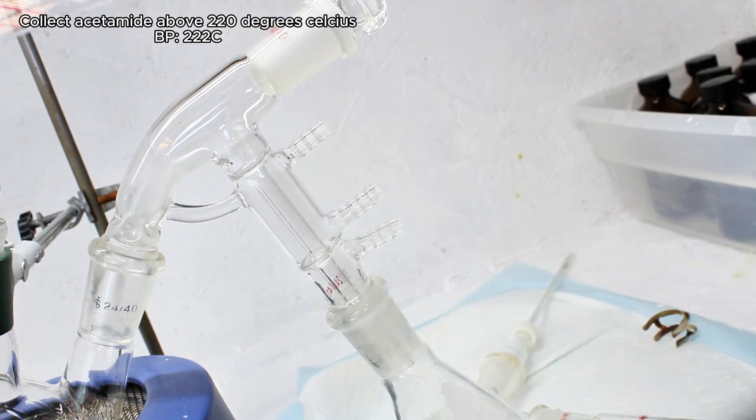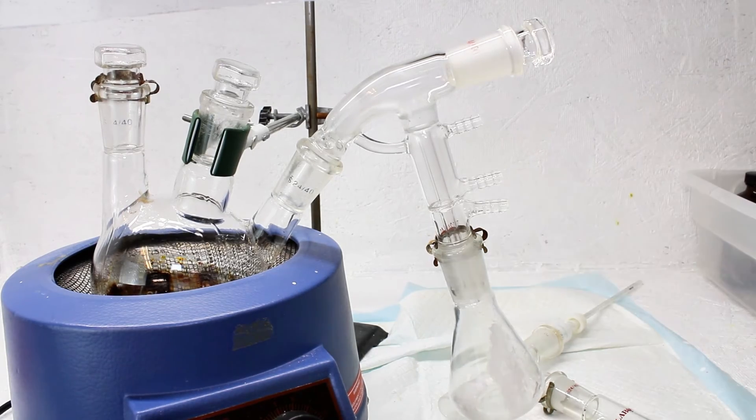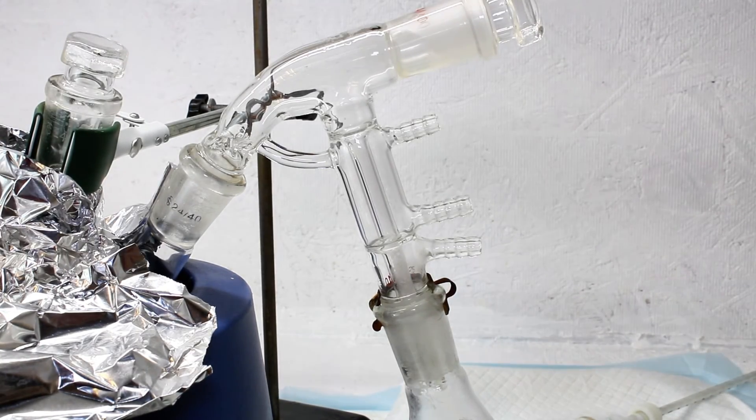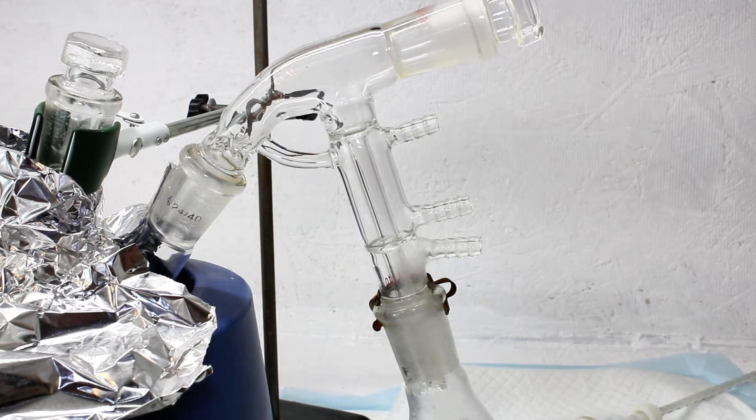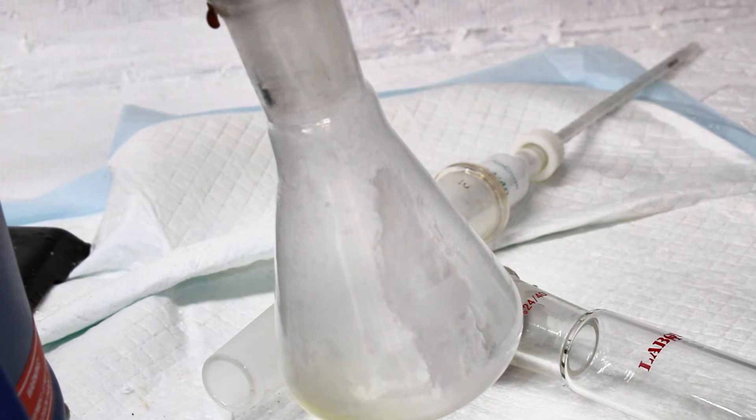This should be mostly acetamide, which collects as a liquid that very slowly crystallizes to a solid. You'll also notice that my acetamide is a yellowish off-white color, which could be due to impurities in the fertilizer I used as my source of urea, and I'm not actually entirely sure.